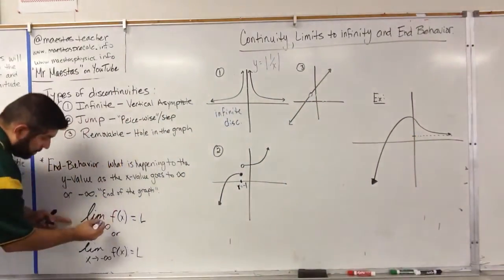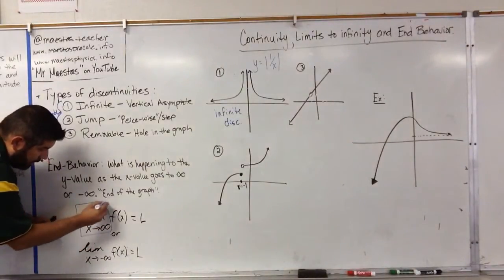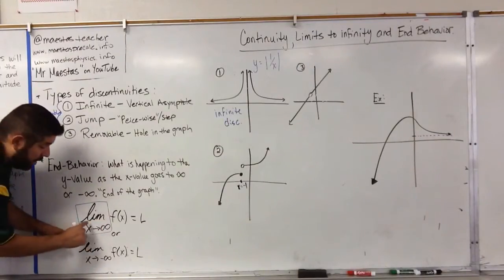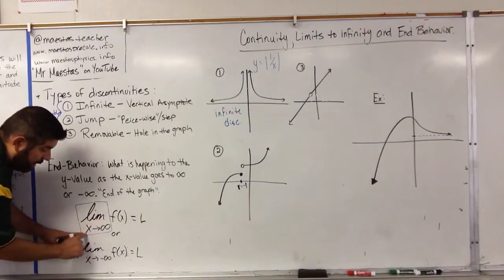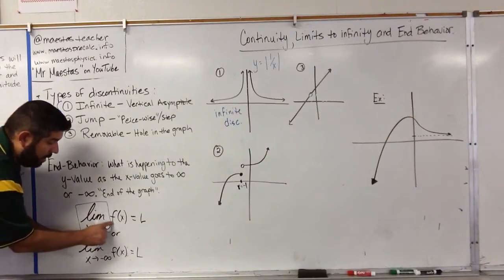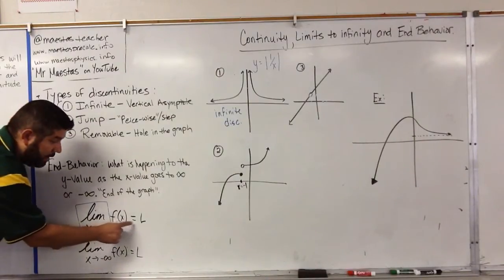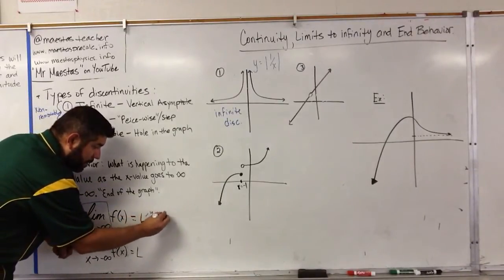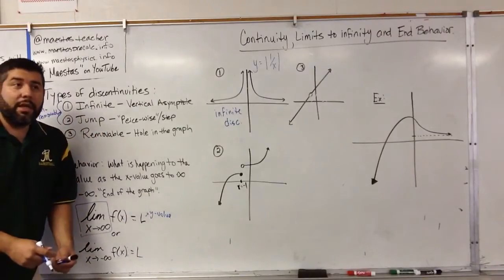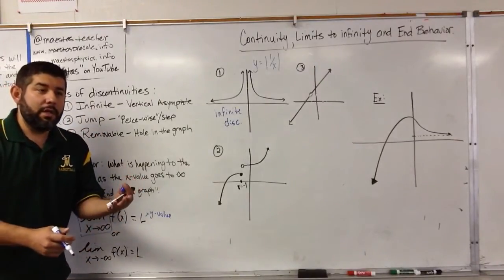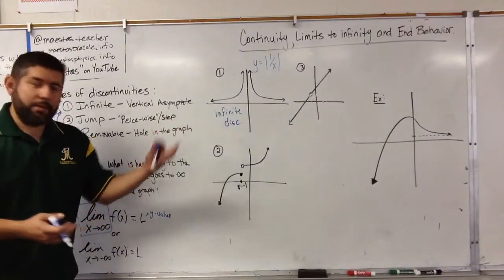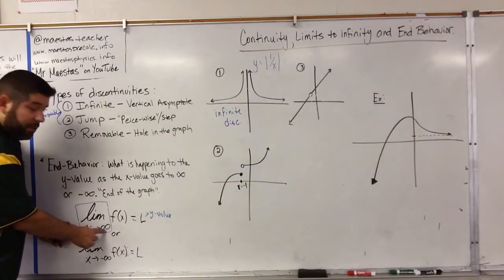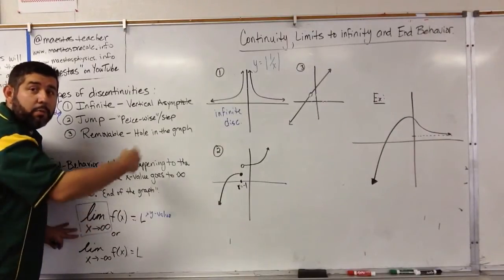This notation goes together: LIM, meaning the limit, and right underneath that is x arrow infinity. This stands for: the limit as x goes to infinity of f(x) is equal to L. Basically, L is a y value. Or it may not be a specific value — if the function goes on forever, then we don't have a limit; the limit doesn't exist. So the limit as x approaches infinity of f(x) equals L describes one side of the end behavior.